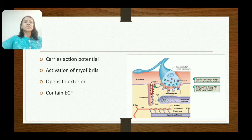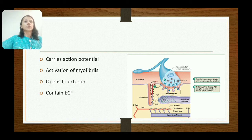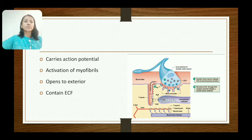This action potential is rapidly conducted along the sarcolemma over the surface of the muscle fiber and then into the interior of the muscle cell by the T-tubules. Therefore, deep-lying myofibrils are also activated, and action potential is transmitted throughout. These T-tubules are open to the exterior and therefore contain extracellular fluid.